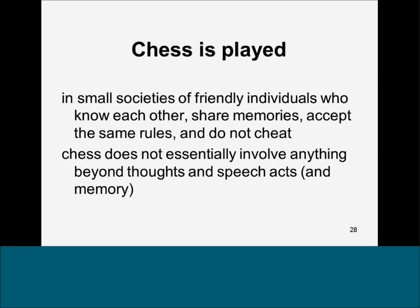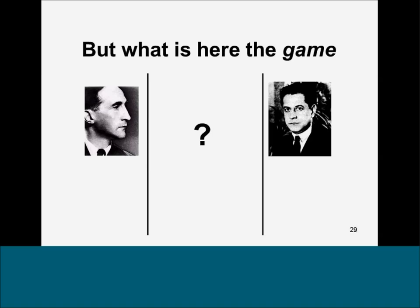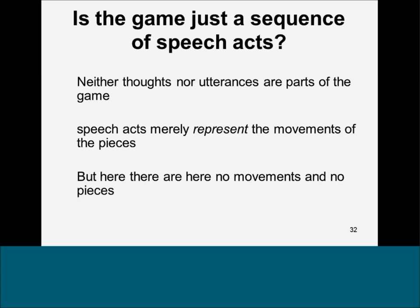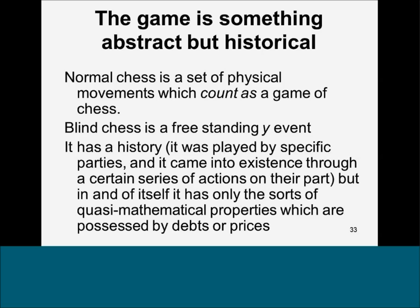The question arises: in the case of blind chess, what is the game? I think this is a really interesting problem. We know that there are thoughts and speech acts, but neither the thoughts nor the speech acts are parts of the game—they merely represent the game. The game is not movements of pieces, because there are no pieces and no movements. The idea is that the chess game is something both abstract and historical at the same time, in the case of blind chess. Normal chess is a set of physical movements that constitute the game. Blind chess is a freestanding Y event.